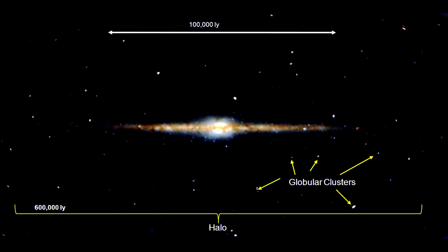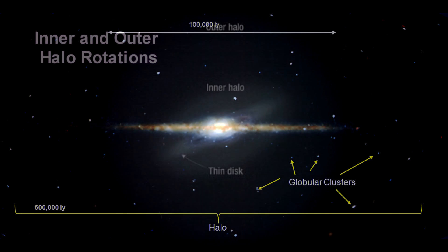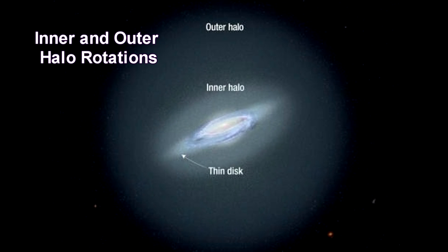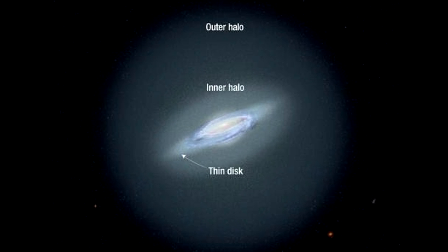There is no star formation out in the halo. In 2007, using 20,000 stars observed by the Sloan Digital Sky Survey, an international team of astronomers discovered that the outer Milky Way is a mix of two distinct components rotating in opposite directions. The inner halo, located well outside the disk, rotates in the same direction as the disk but more slowly, at 50,000 miles per hour. In the outer halo, most components spin in the opposite direction at about 100,000 miles per hour.